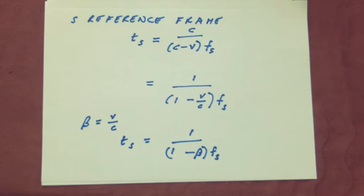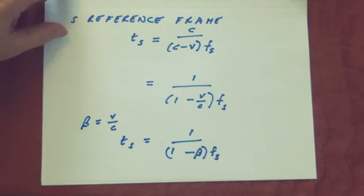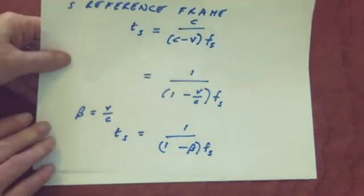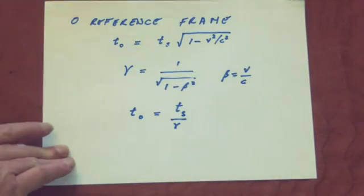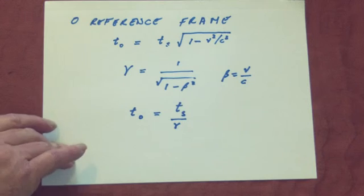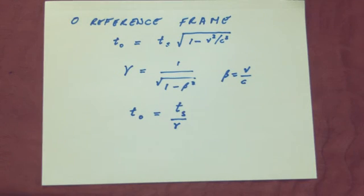As I said, time as measured at the source will be different from that measured by the observer, and therefore the time periods will be different. We need the special relativity time dilation equation. Gamma is the Lorentz factor. The time period for the observer is the time period for the source divided by gamma.